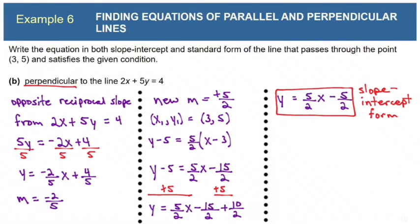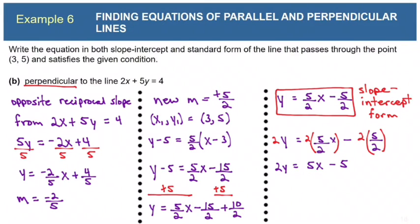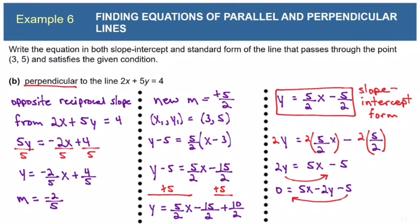Now let's transform to standard form by multiplying everything by 2 to eliminate denominators. The 2s cancel, giving 2y equals 5x minus 5. To get x and y on the same side with x positive, I bring the 2y term to the right: 0 equals 5x minus 2y minus 5. Then bringing negative 5 to the left makes it positive, and rewriting with x and y on the left gives 5x minus 2y equals 5 as our standard form.